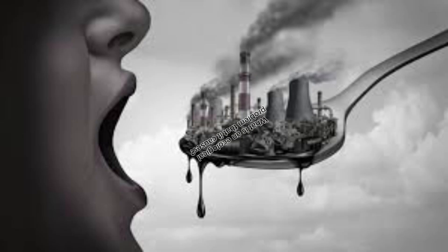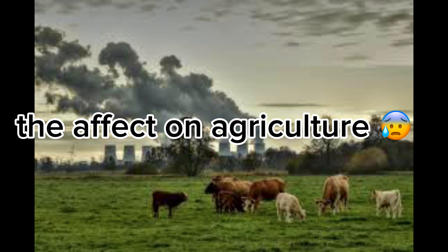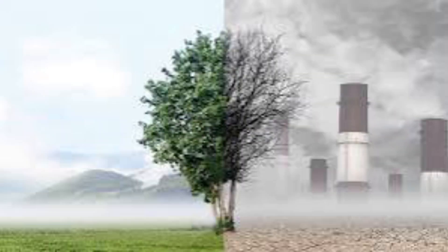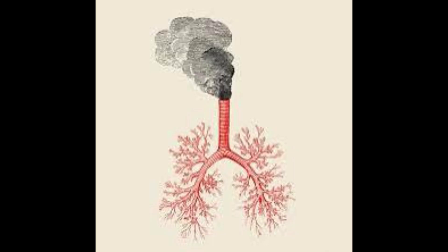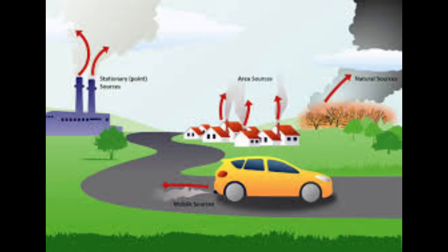Air pollution can cause a lot of problems ecologically, but one of the problems is how it affects agriculture. Air pollution is able to cause problems because it contaminates the soil. Contamination to the soil ends up killing the crops, and air pollution leads to agricultural decrease in crops and plants specifically.